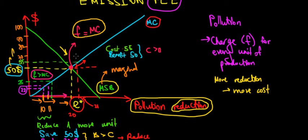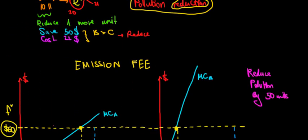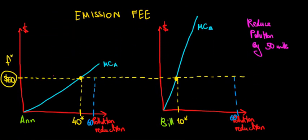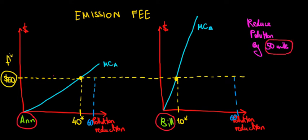Recall from the previous video that we established that the optimal emission fee is going to be equal to the marginal cost of reducing pollution. Now let's translate this concept into a two-company scenario. If we have two producers in the society — let's say these are N and Bill — they produce output that generates pollution and we would like to reduce it by 50 units. That's a requirement from the government, and we establish the equilibrium fee at $50.